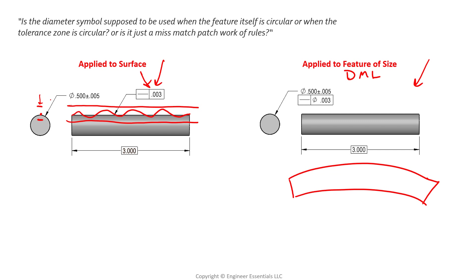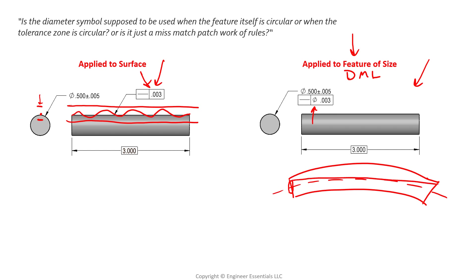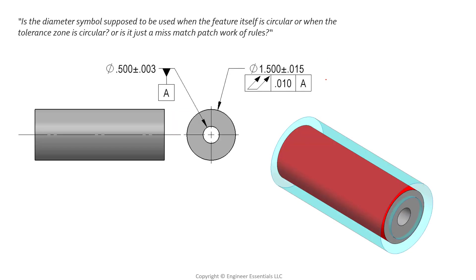But if we are controlling a feature of size, we're controlling the derived median line — the irregular center line that represents any bow or twist in that part. In that case, the tolerance zone has a diameter. We're controlling this center axis inside a cylindrical tolerance zone, and that tolerance zone is three thousandths in diameter. So we've identified the tolerance zone size as a diameter of three thousandths, and the diameter symbol is used.